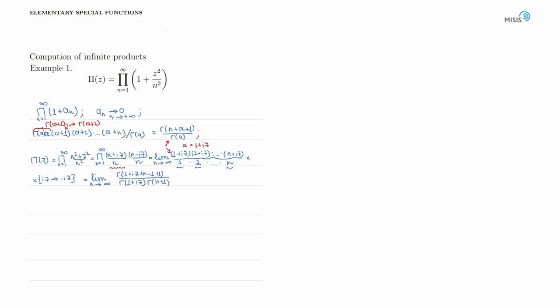This is the first part of our product. The second part has the only difference that iz is changed to −iz. The second part is gamma(1 − iz + n) divided by gamma(1 − iz) and gamma(n + 1). This is a much more suitable expression to work with.